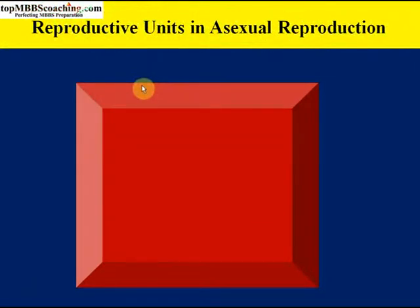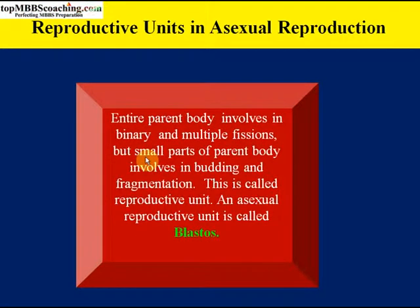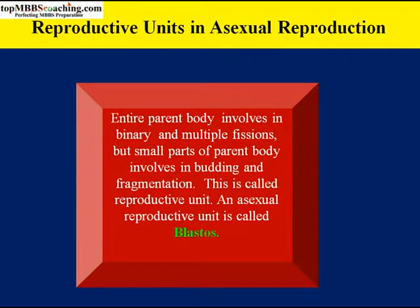Reproductive units in asexual reproduction: the entire parent body is involved in binary and multiple fissions, but small parts of the parent body are involved in budding and fragmentation — these are called reproductive units. The asexual reproductive unit is called a blastos, because after formation of the zygote there is multiplication that forms blastomeres.